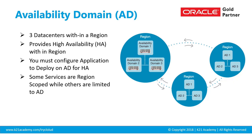Availability domains are three data centers within a region interconnected by a high-bandwidth, low-latency network, providing high availability within Oracle public cloud. Within a region, you will have three availability domains for fault tolerance and high availability. It's important to understand availability domains because subnets and machines you create on OCI are specific to an availability domain.